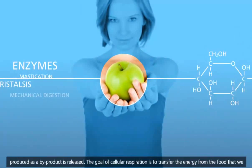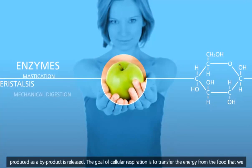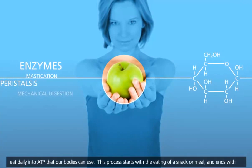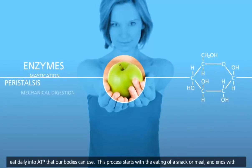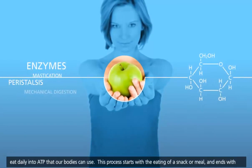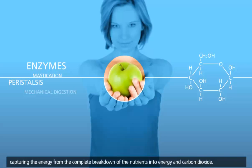The goal of cellular respiration is to transfer the energy from the food that we eat daily into ATP that our bodies can use. This process starts with the eating of a snack or meal, and ends with capturing the energy from the complete breakdown of the nutrients into energy and carbon dioxide.